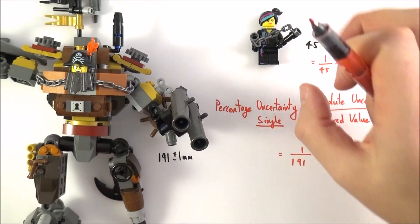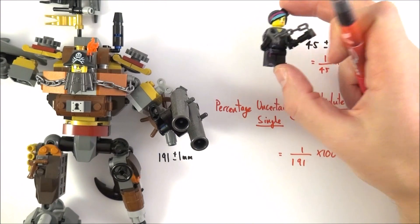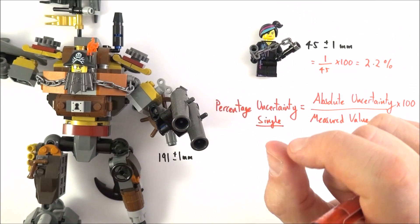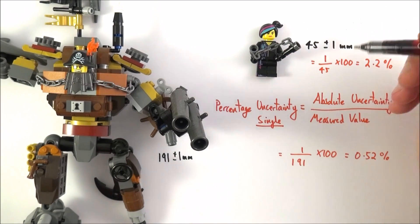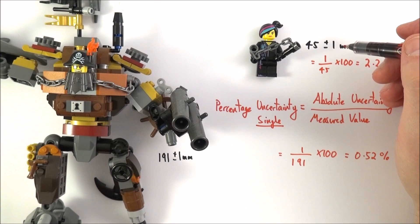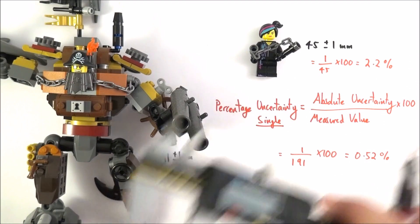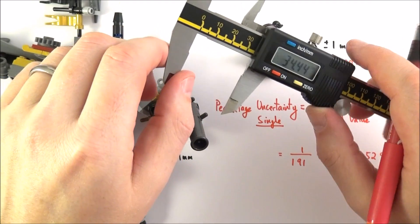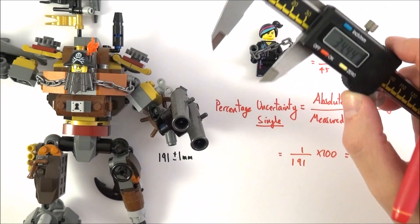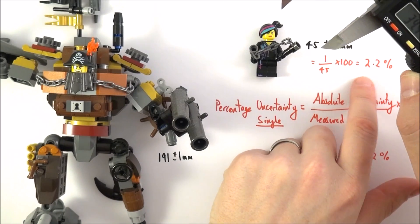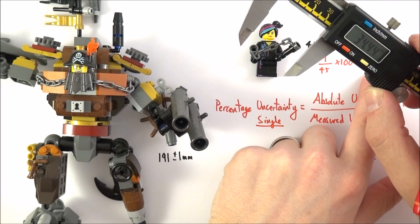And effectively this means that we might think about what is the most suitable thing to measure the height with. Maybe that ruler with an absolute uncertainty of one millimeter wasn't the most appropriate thing. Maybe if we'd used the digital caliper with an absolute uncertainty of 0.01 millimeter, this would then mean we had a smaller percentage in that measured value.